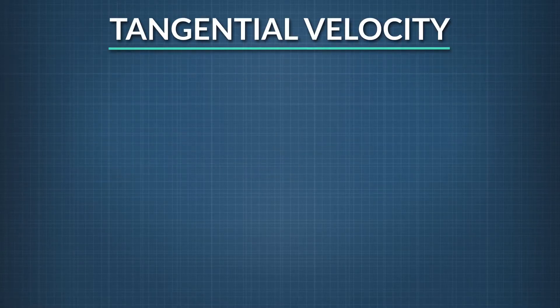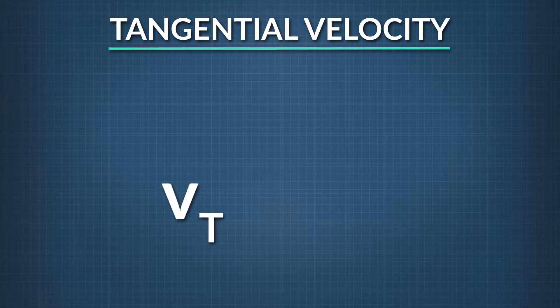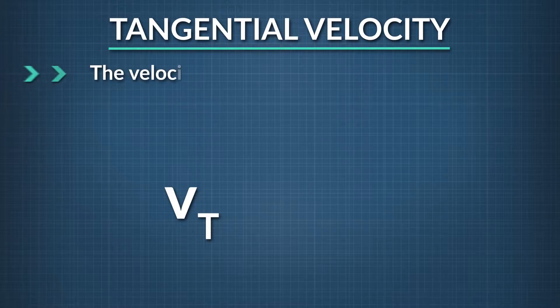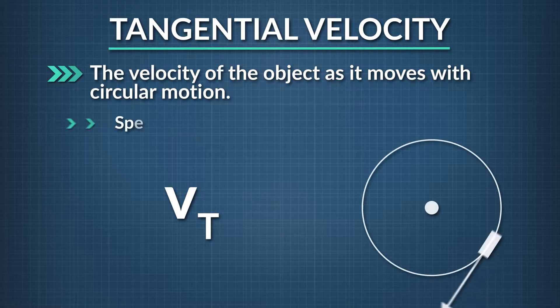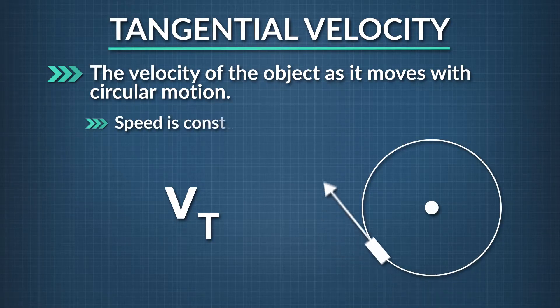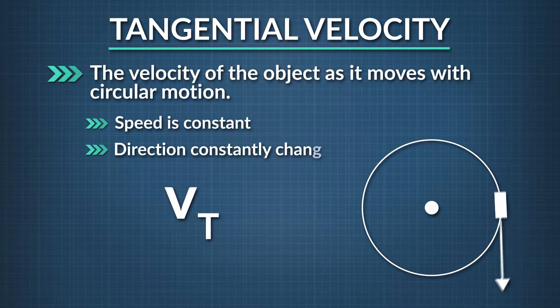The first key property that any object moving in a circular motion possesses is called tangential velocity, represented with v with a subscript of t. Tangential velocity can be thought of as the velocity of the object as it moves with circular motion. The speed remains constant, while the direction of the object is always changing.